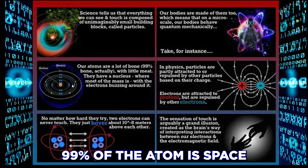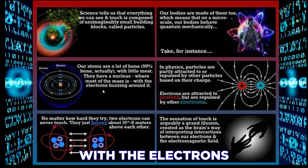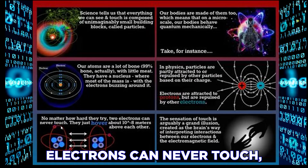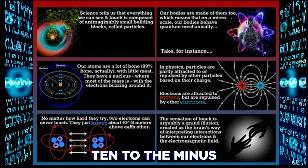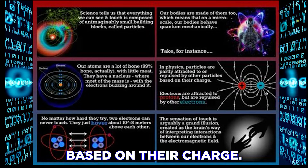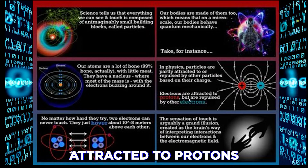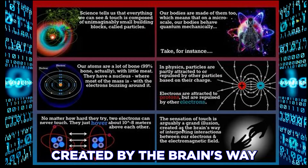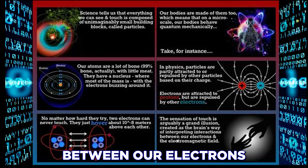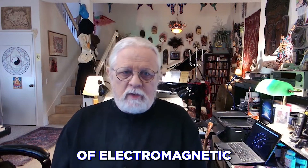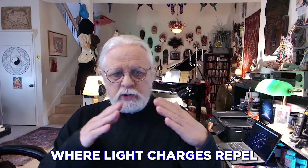Science tells us that everything we can see and touch is composed of unimaginably small building blocks called particles. Our bodies are made of them too, meaning on a micro scale our bodies behave quantum mechanically. 99% of the atom is space — atoms have a nucleus where most of the mass is, with electrons buzzing around the outside. No matter how hard they try, two electrons can never touch — they hover about 10 to the minus 8 meters above each other. Sensation of touch is arguably a grand illusion created by the brain's interpretation of electromagnetic interactions where like charges repel.